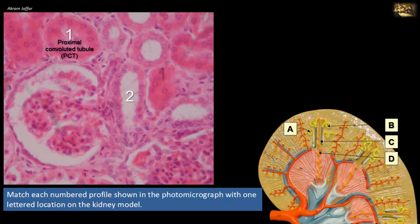Compare the cytoplasmic stain of profile number one, the proximal convoluted tubule, with profile number two, noting the deeply stained cytoplasm of the proximal convoluted tubule and similar profiles in the photomicrograph. Since the proximal convoluted tubule is the longest and most convoluted part of the nephron, it constitutes the bulk of the renal cortex and its profiles are most abundant in this section. The proximal convoluted tubule is represented in the plastic model by A.